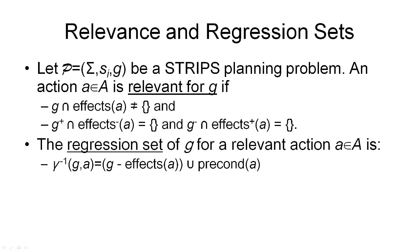We will start by defining two concepts, namely relevance and regression sets. Relevance is really the equivalent concept to applicability as it tells us which actions we can use to move through our search space. Again, we start with a planning problem consisting of the usual things, namely a state transition system that tells us how the world can evolve, an initial state from which we're moving away, and a goal description which tells us which states are goal states.